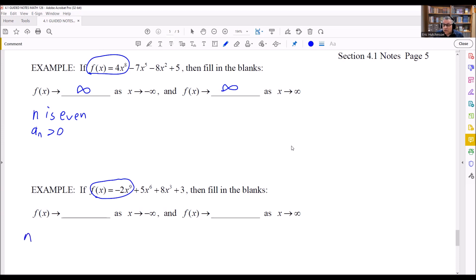In this case, my n is 9, so n is odd. And the number that comes in front of the x, my a_n, is less than 0.